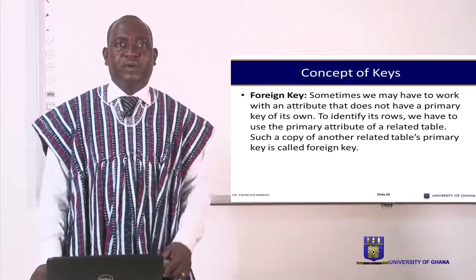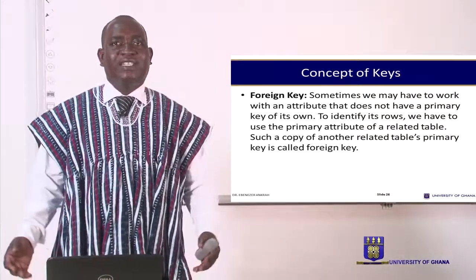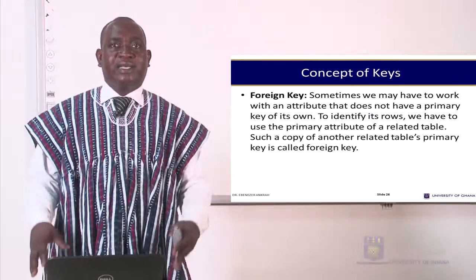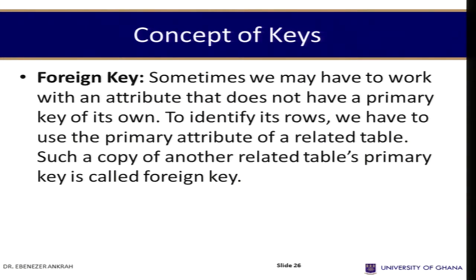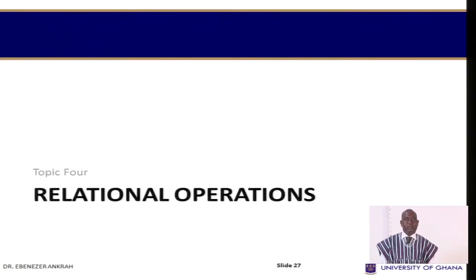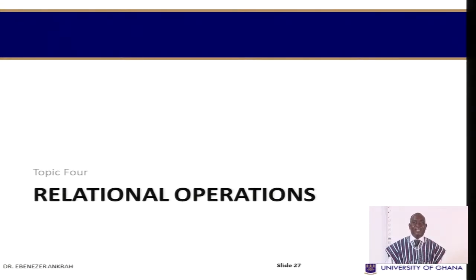We also have the foreign key. Sometimes we may work with an attribute that does not have a primary key of its own. A foreign key is a key that serves as a primary key in a different table — in the related table it serves as a foreign key, but in the original table it serves as the primary key. We have discussed the super key, candidate key, primary key, alternative key, composite key, and foreign key.